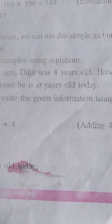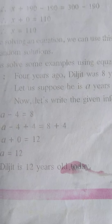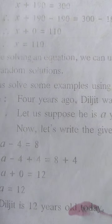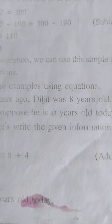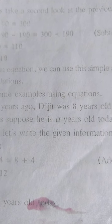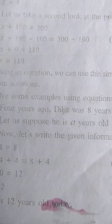Next example. 4 years ago, Daljit was 8 years old. How old is he today? Now we don't know what is the today's age of Daljit. Let us suppose he is some age. We take a variable 'a', and since 4 years ago Daljit was 8 years, his today's age is 'a'.